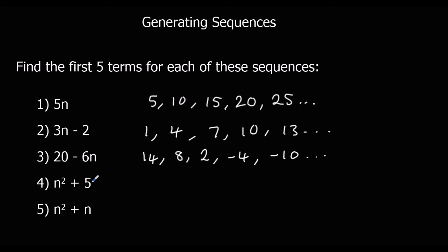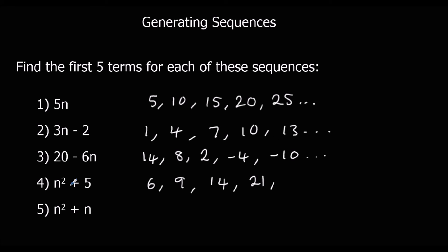For n squared plus 5: 1 squared is 1, plus 5 is 6. 2 squared is 4, plus 5 is 9. 3 squared is 9, plus 5 is 14. 4 squared is 16, plus 5 is 21. And 5 squared is 25, plus 5 is 30.